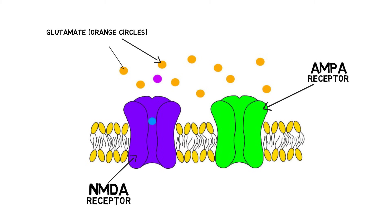NMDA receptors are found nearby these AMPA receptors, but are not activated by low levels of glutamate release because the ion channel of an NMDA receptor is blocked by a magnesium ion.